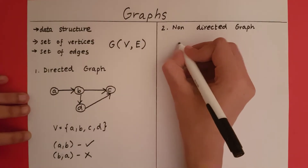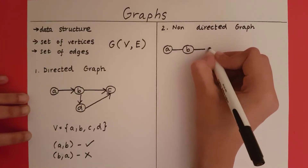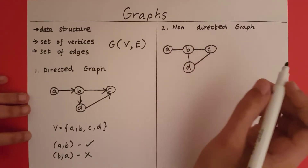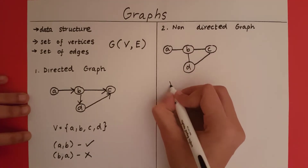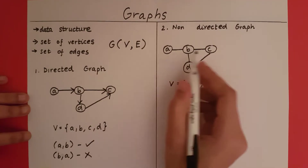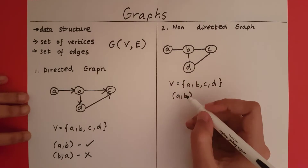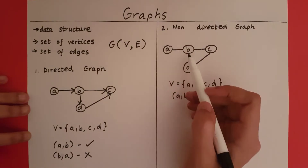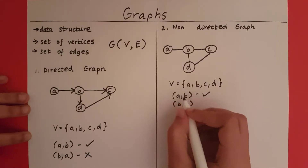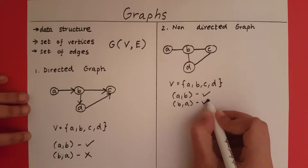So let me give an example. My set of vertices are A, B, C and D. Now if I ask the question, does the edge A, B exist? I will say, is there an edge between A and B? Yes. Then I ask the question, does the edge B, A exist? Yes, there is an edge between B and A. So this will also exist.